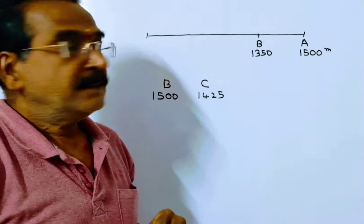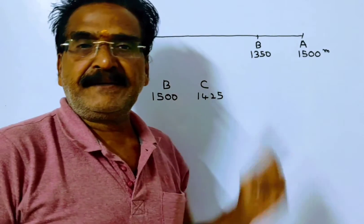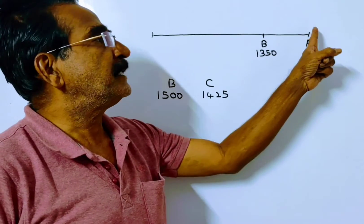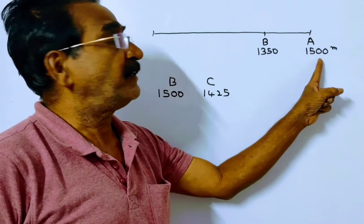See friends, A beats B by 150 meters means by the time A completes the race, that means by the time A travels 1500 meters,